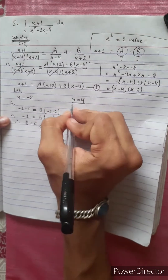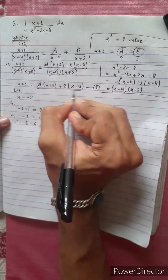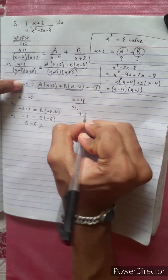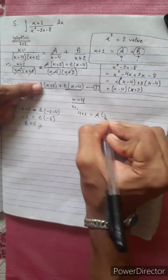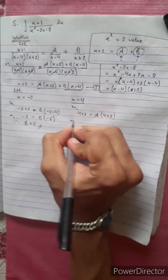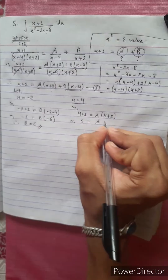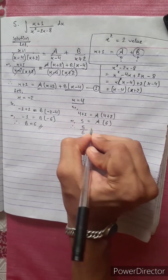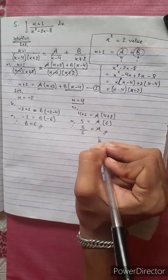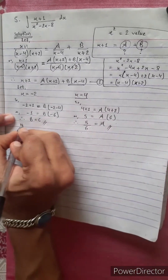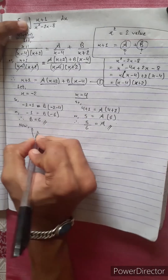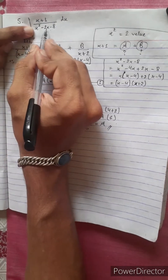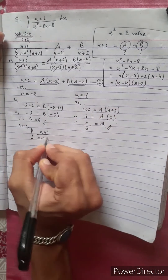Therefore B equals minus 1 over minus 6, so B equals 1 by 6. Now to find A, let x equal 4. The B term becomes 0. So 4 plus 1 equals A times (4 plus 2), which gives 5 equals A times 6, therefore A equals 5 by 6.